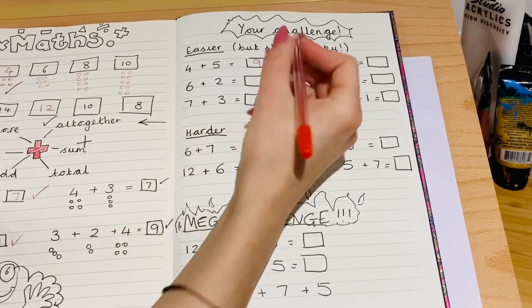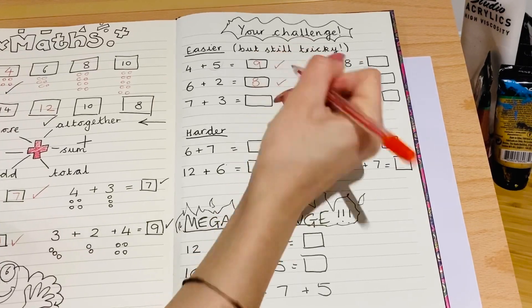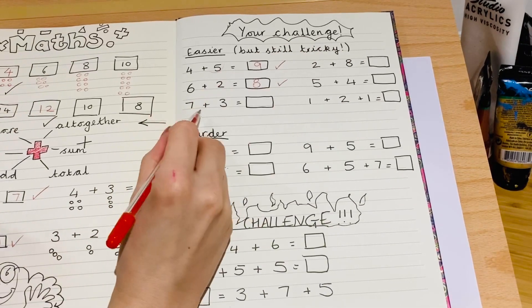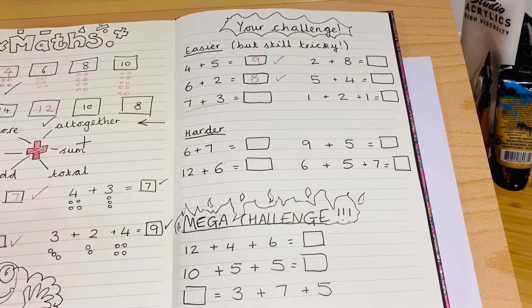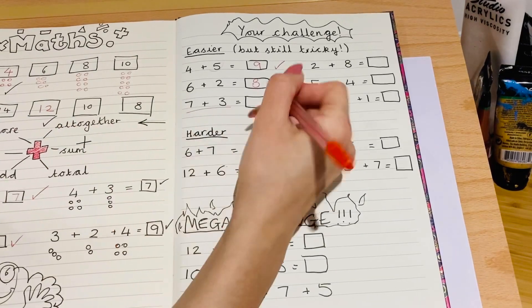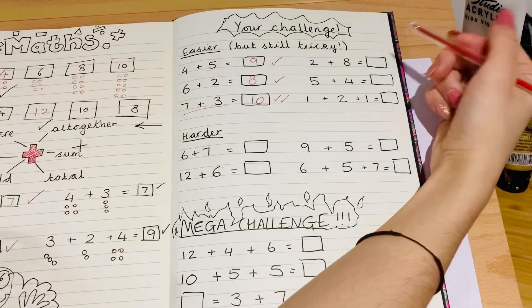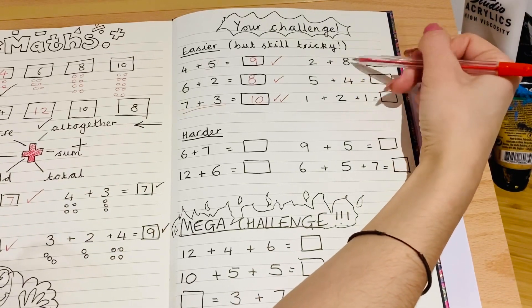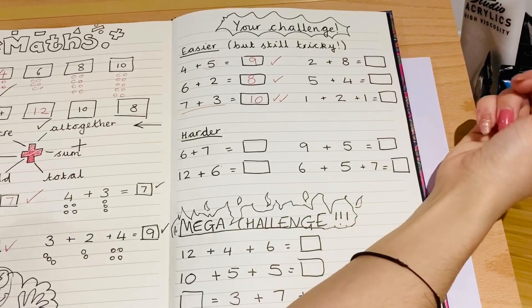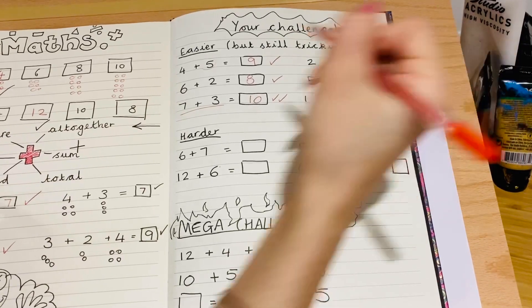Okay, six plus two is eight. Give yourself a tick. Seven plus three. This one is actually one of our number bonds to ten. So if you spotted that, give yourself a double tick. The answer is ten. Well done. This one again is a number bond. Two plus eight. I've put the smaller number first to try and trick you there, but the answer is still ten. Give yourself a double tick.